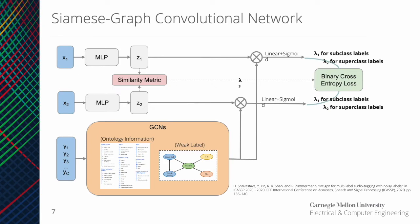Since we found the Siamese framework doesn't work as well as expected, we try to incorporate ontology information using ontology embeddings. Referring to previous work on multi-label classification using graph convolutional networks, we combine this approach with our Siamese network. We stack GCNs to learn embeddings for each ontology node. The GCNs take both initial ontology node representations and the correlations between nodes as inputs, then map them into a set of label representations which capture the interrelationships between labels. The label representation is then applied to the audio representation extracted from the Siamese network for multi-label audio classification.